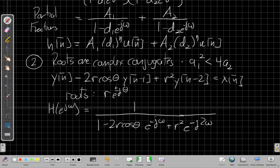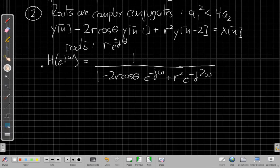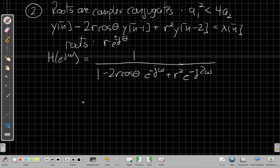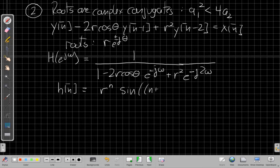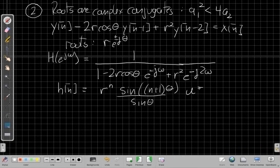And I can use these forms and go back to do partial fractions and a lot of complex algebra that I am not going to torment you with today. It just seems unkind. If you want to see all the steps, you can in the book or work them out on your own. But when you go through all this, you're going to end up with r to the n times sine of n plus 1 theta over a constant that is sine of theta all times u of n.